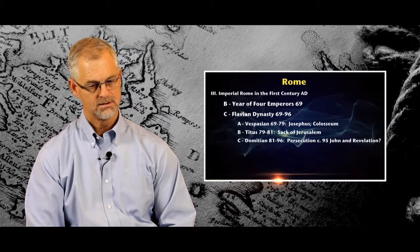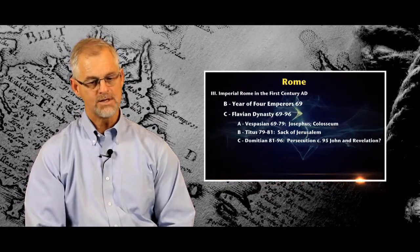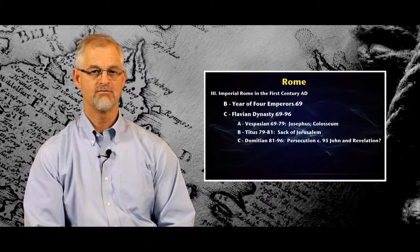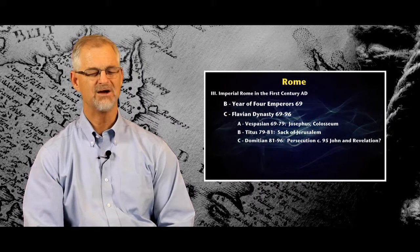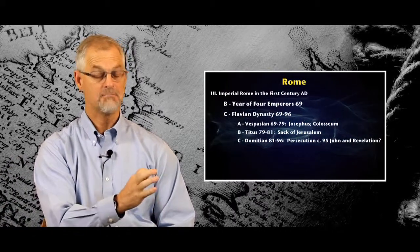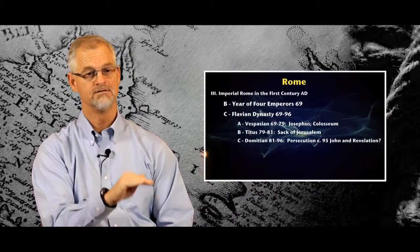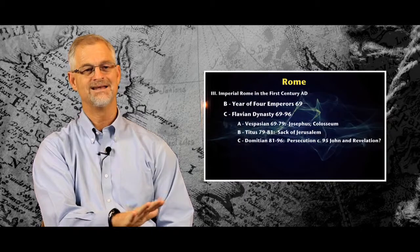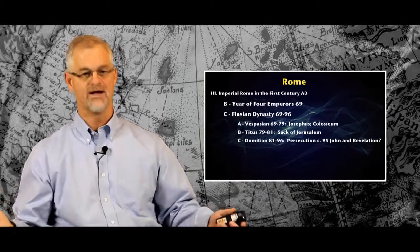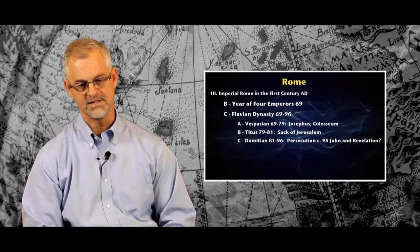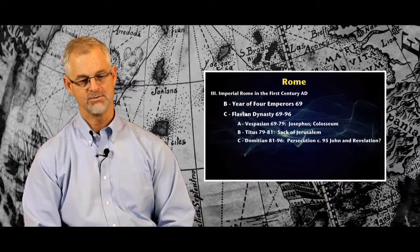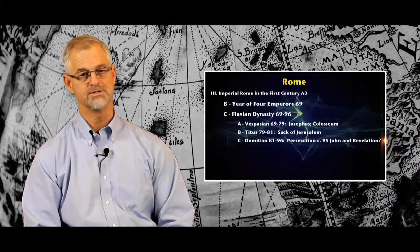It is possible, though the evidence is not strong, that there was a persecution of Christians under Domitian. Some people think that the book of Revelation, which talks about John being exiled to the island of Patmos, many people think that was written during the reign of Domitian. If so, then there was some sort of persecution going on that caused John to be exiled to the island of Patmos. The problem is that we have no other evidence of any persecution going on during that period of time. So if there was, it was very limited and very local. But it is possible that the book of Revelation was written during this time as a result of persecution under Domitian.